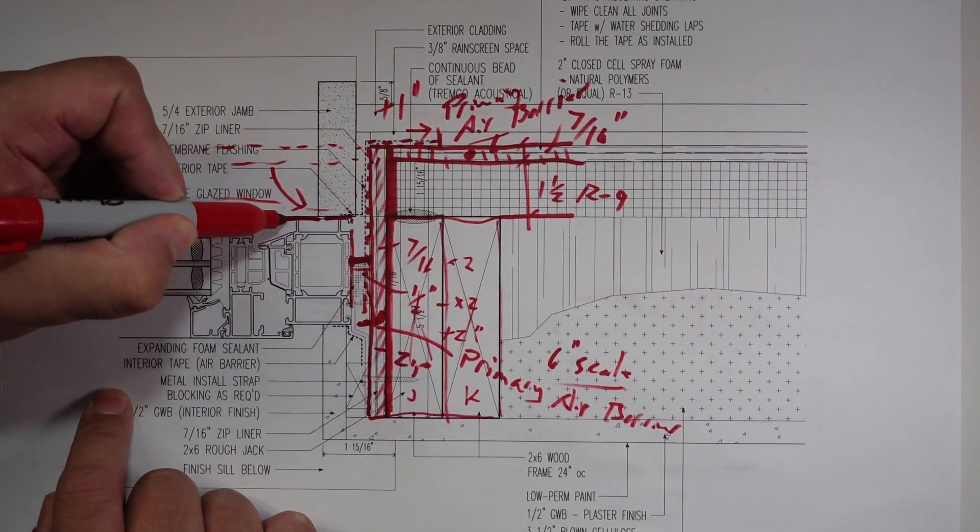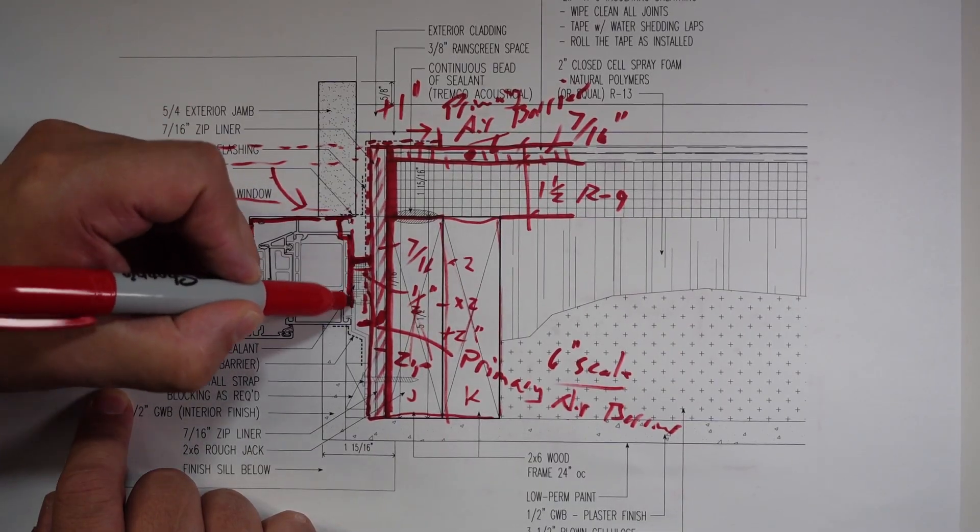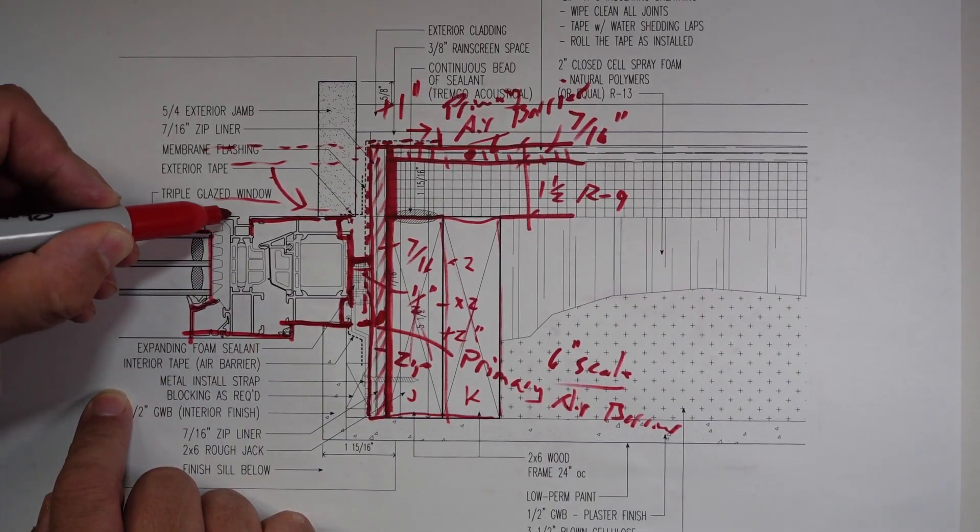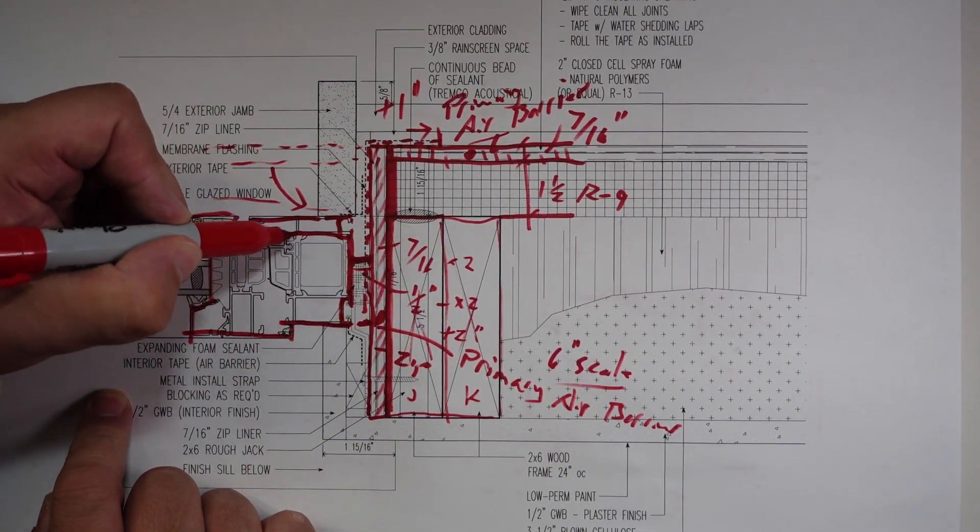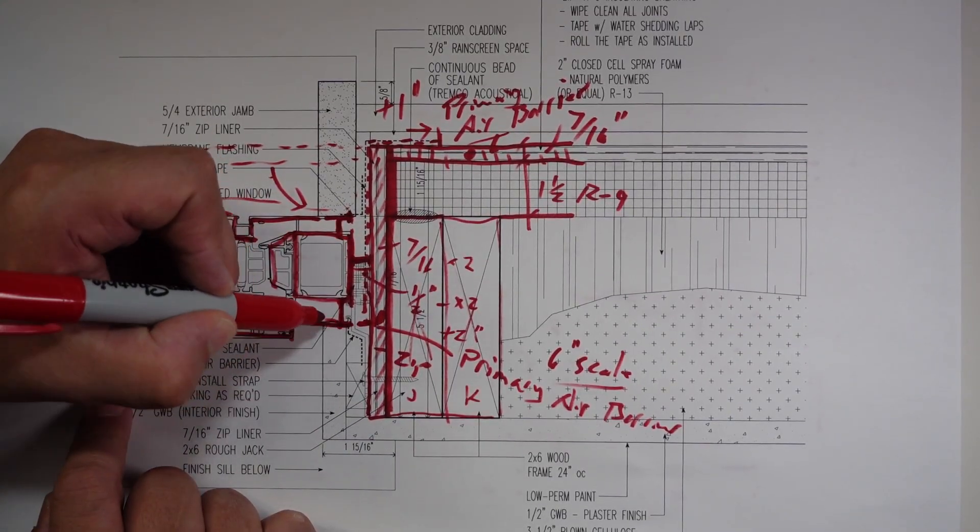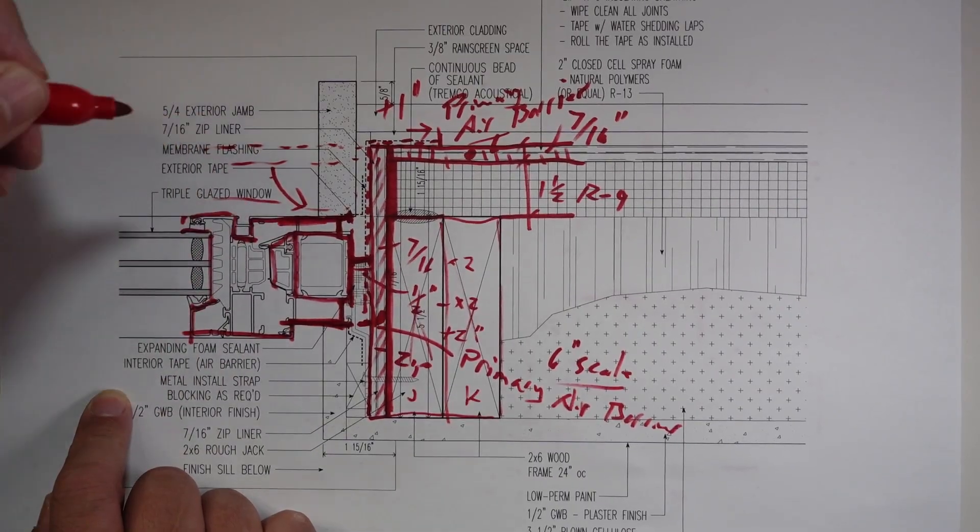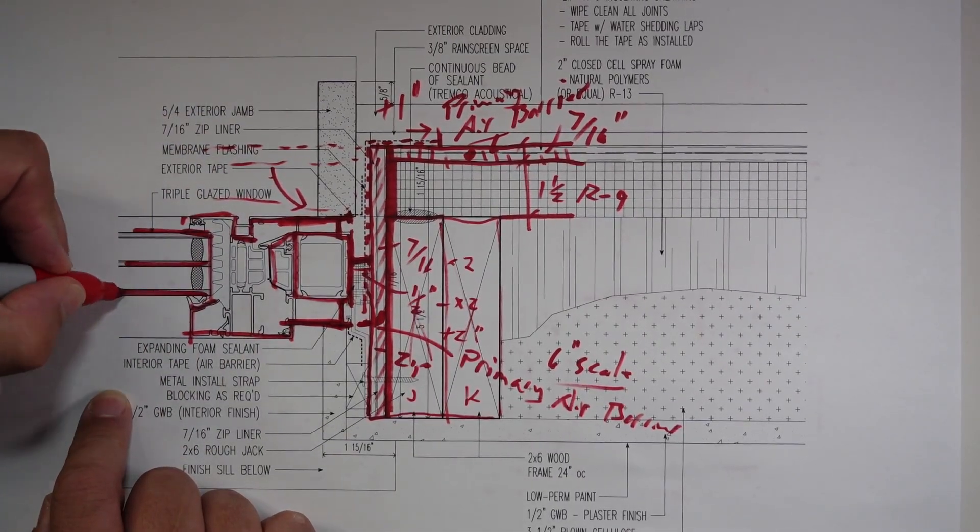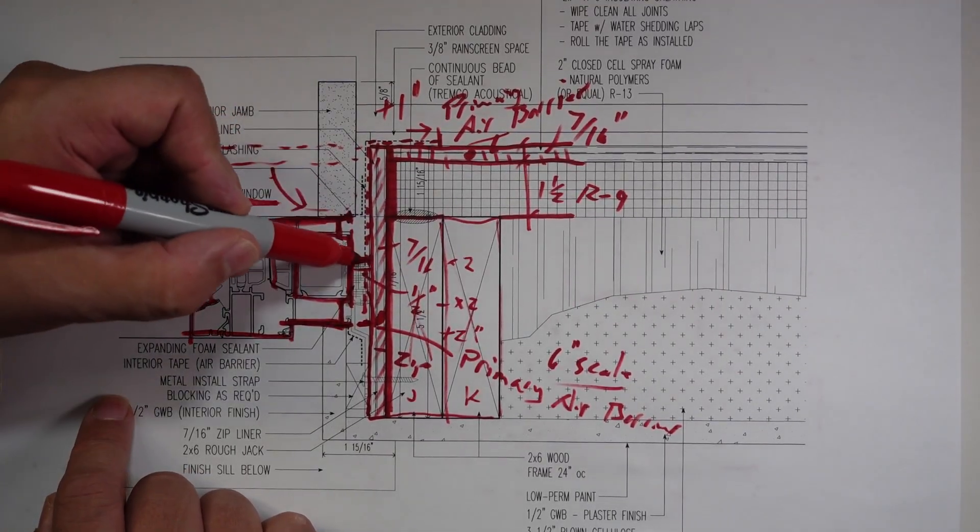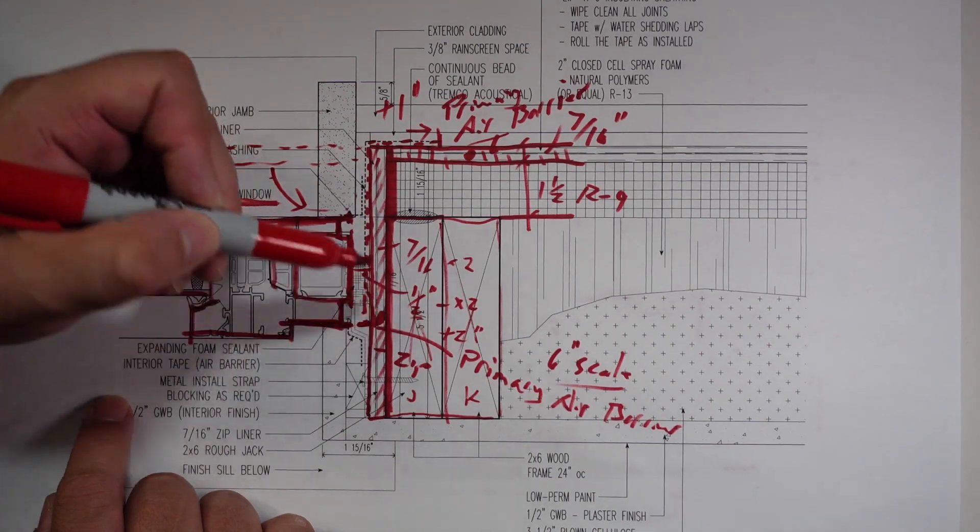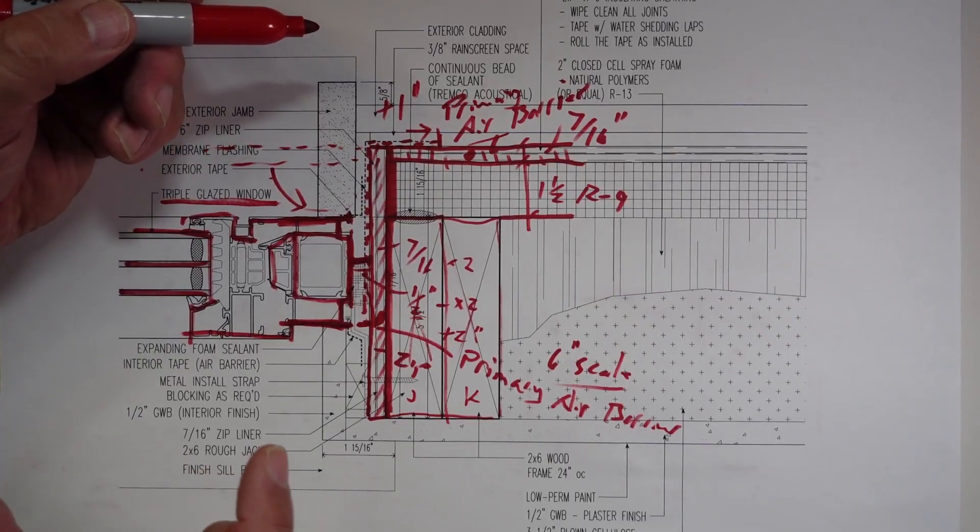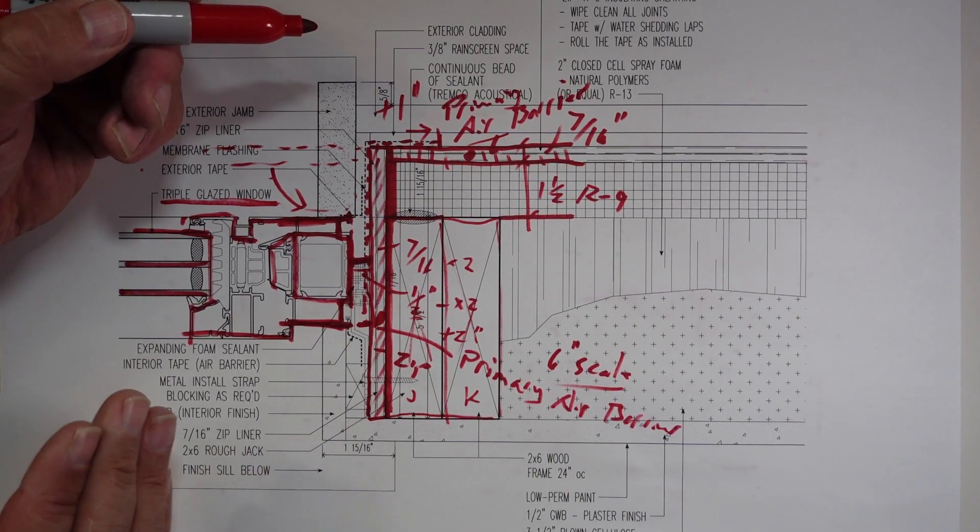So now we have that membrane there. I install the window and you can see the window here, it's got a funky frame to it. Then there's some void action happening inside there, but really the window is there, and you can see these are the three panes of glass because it's a triple glazed window.